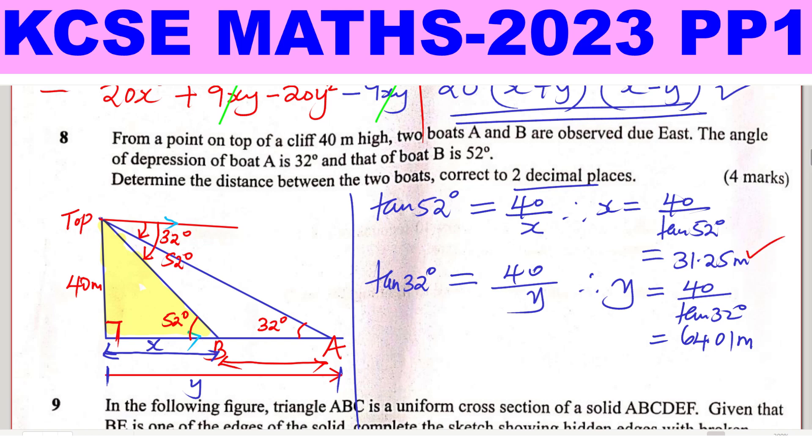Now we have these two lengths. So we have this side which is 64.01 and then we have this one as 31.25. Now to get BA, the distance BA, we simply take the whole length which is 64.01, then we subtract 31.25. We remain with that required length which is BA. This one will give us 32.76 meters. As simple as that.